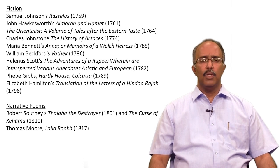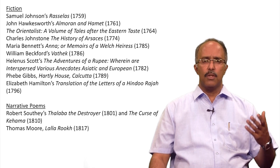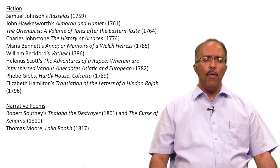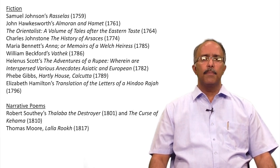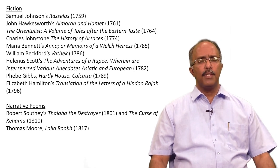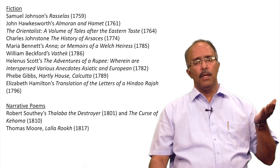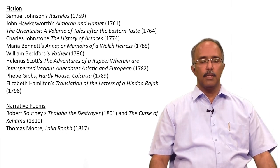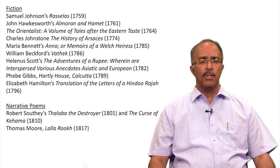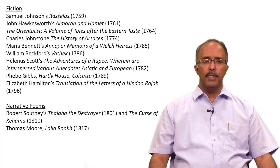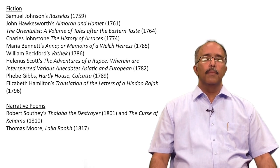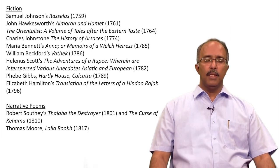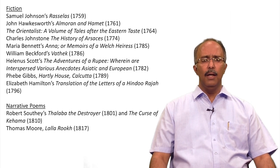We can start with Samuel Johnson's Rasselas, 1759, John Hawksworth's text of 1761, Almoran and Hamet — lesser known texts of course. The more famous ones are William Beckford's Vathek, 1786, Phoebe Gibbs' Hartley House, Calcutta, which is traditionally taken to be the first Anglo-Indian novel — novels by Britishers set in British India. For a long time we did not know the author's name; the text is dated 1789, and now we have discovered the author was Phoebe Gibbs. Then there are Elizabeth Hamilton's translations of the letters of a Hindu Raja, narrative poems such as Robert Southey's Thalaba the Destroyer and The Curse of Kehama, and Thomas Moore's Lalla Rookh.